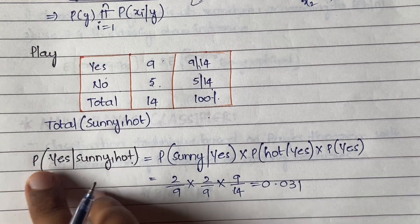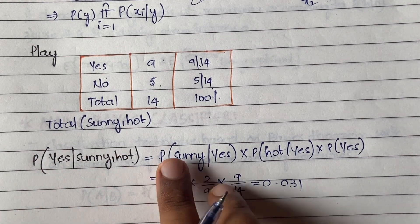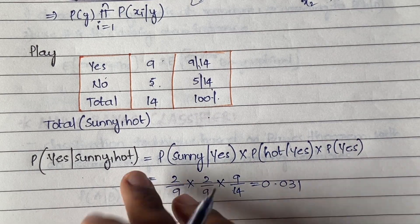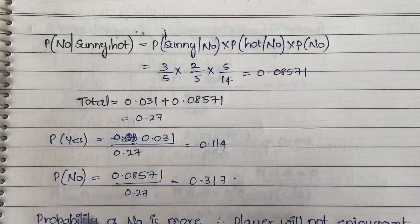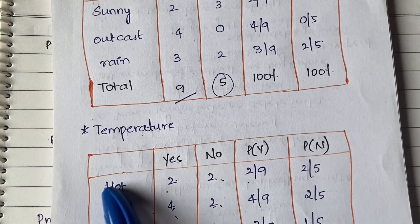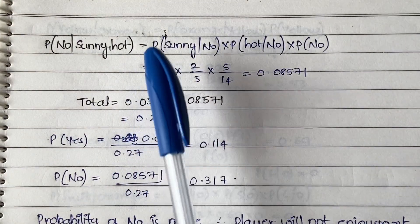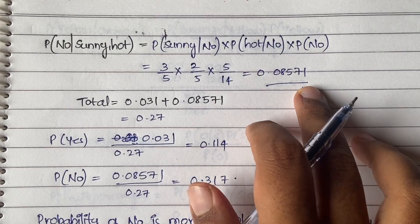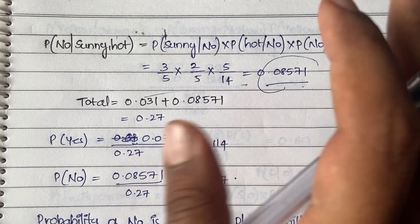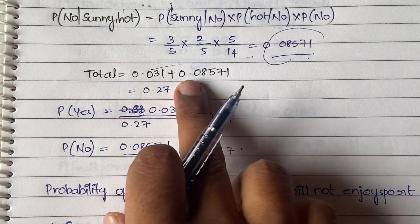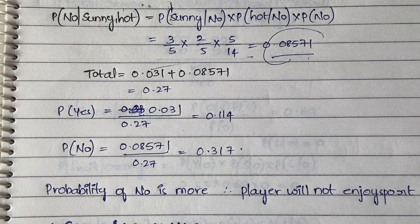Now for no: P(no | sunny, hot) = P(sunny | no) × P(hot | no) × P(no) = (3/5) × (2/5) × (5/14), which gives 0.0857. The total probability of both yes and no is 0.031 + 0.0857 = 0.117 (approximately 0.27 as stated). Now we normalize to get individual probabilities.